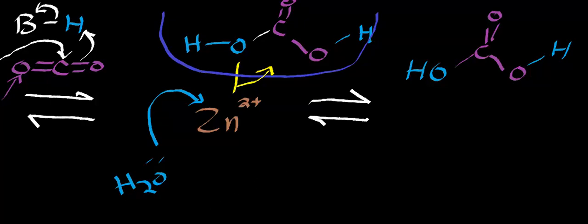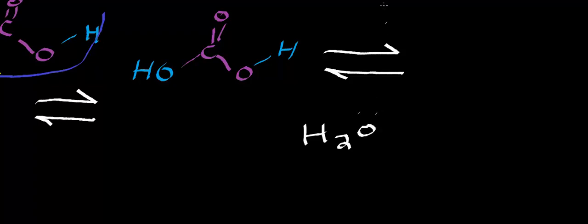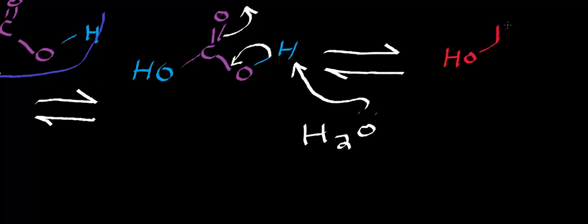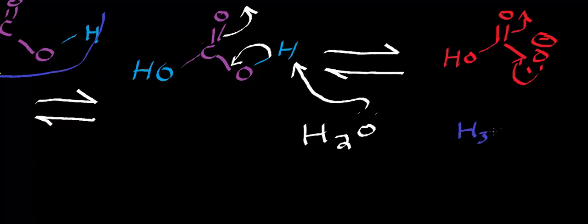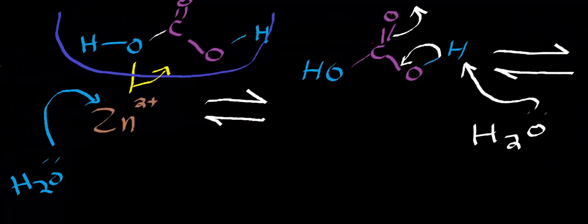Now we see how carbonic acid lowers the pH of the blood. Carbonic acid has a lower pKa than water, so water deprotonates it, forcing the electrons in, generating bicarbonate — note the resonance structure — and hydronium. It is this hydronium that directly decreases the pH of the blood. This is the mechanism of carbonic anhydrase and how increased CO2 lowers pH.